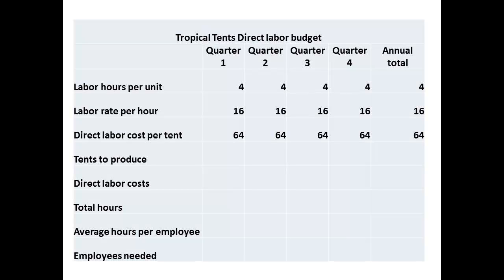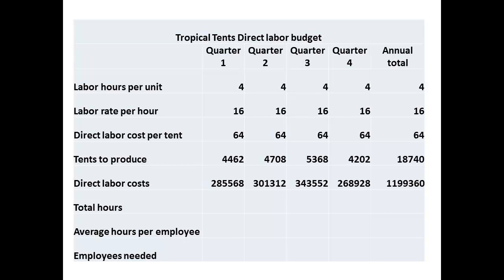The direct labor budget can also be determined since we know the number of tents to be produced each quarter. Each tent requires four hours of labor to complete, and labor costs are $16 per hour. The direct labor cost per tent is therefore $64. We enter the number of tents that have to be produced from the production budget, and this will then give us our direct labor costs. The company is now in a position to see what effect this will have on the labor force. The total number of hours to be worked in each quarter is calculated. Each employee has a 35-hour week, and there are 13 weeks in a quarter, so the average hours for each employee will be 455. This shows a labor requirement varying from 37 to 47 employees each quarter. The company will have to determine whether the best solution is to hire more labor or to make use of overtime.